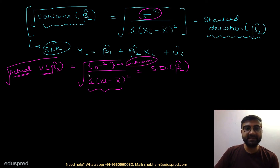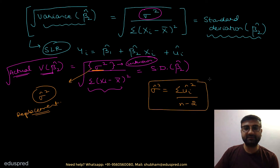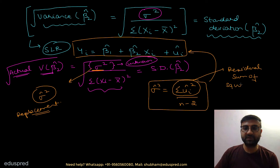What we do is replace sigma square with sigma hat square. Sigma hat square is defined as the summation of ui hat square divided by n minus 2. In the numerator of sigma hat square, this term is called the residual sum of squares, RSS. So you have RSS in the numerator and n minus 2 in the denominator. The expression then becomes sigma hat square divided by summation of xi minus x bar whole square.